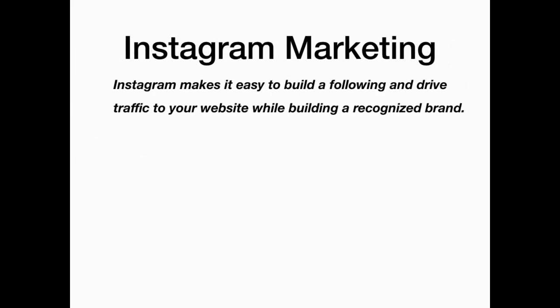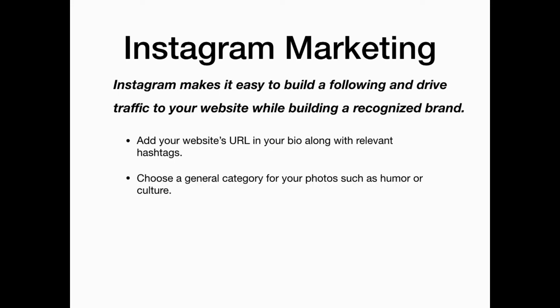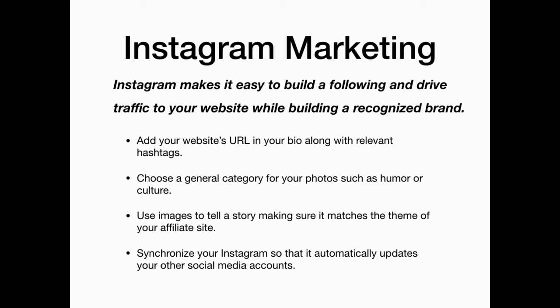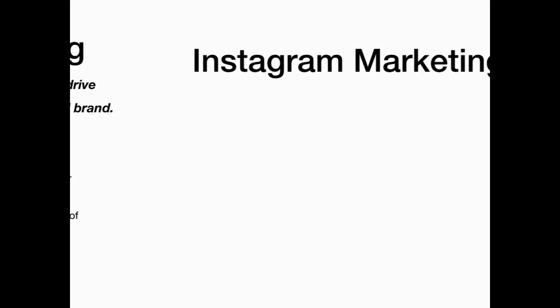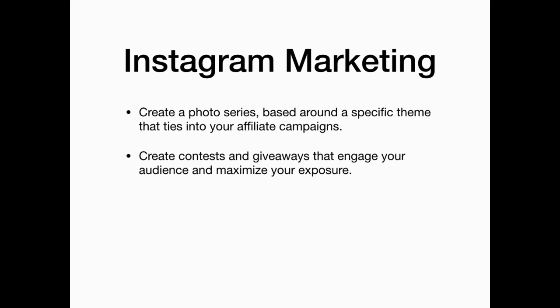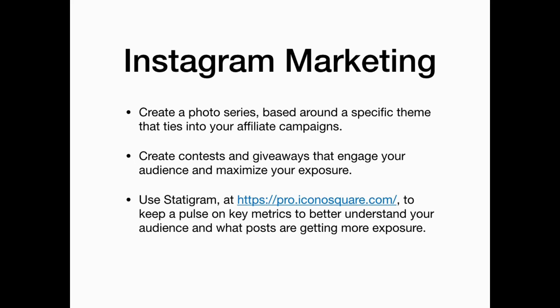Instagram makes it easy to build a following and drive traffic to your website while building a recognized brand. Start by adding your website's URL in your bio along with relevant hashtags. Choose a general category for your photos such as humor or culture. Use images to tell a story making sure it matches the theme of your affiliate site, then synchronize your Instagram account so it automatically updates your other social media accounts. Create a photo series based around a specific theme that ties into your affiliate campaigns, create contests and giveaways, and use Statigram to keep a pulse on key metrics.